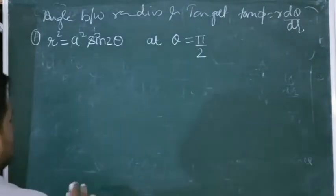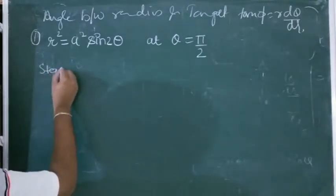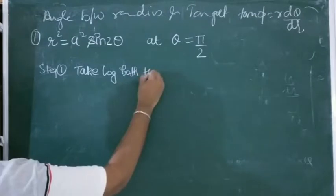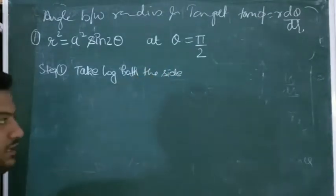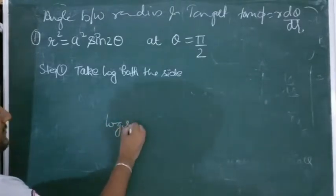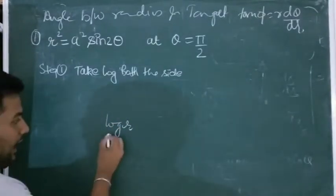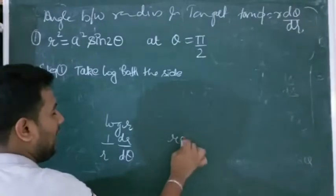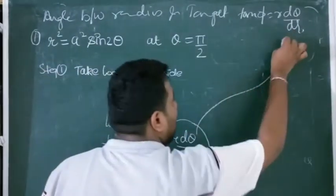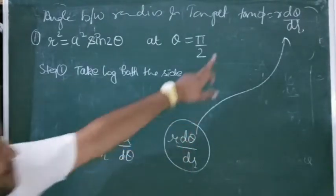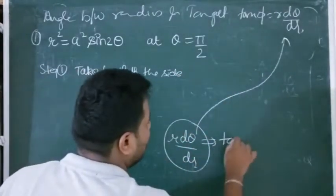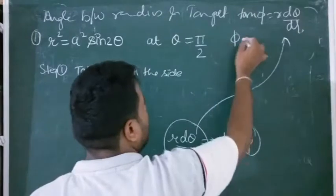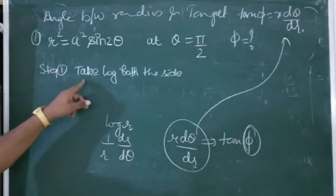My fixed approach is: whenever you see a polar equation, step 1 — take log of both sides. The reason I take log is that when I differentiate it, I get (1/r)·dr/dθ. If I reciprocal it, I get r·dθ/dr, which is nothing but tan φ. So I can directly write tan φ.